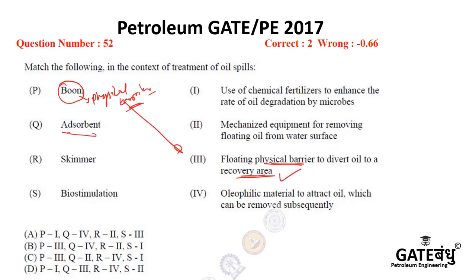An adsorbent is a material that attracts oil on its surface and which can be removed subsequently. To adsorb oil, the material has to be oleophilic — meaning oil gets adsorbed onto the adsorbent. This oleophilic adsorbent attracts oil, which can then be removed, and the oil is subsequently separated out from the adsorbent for further processing.